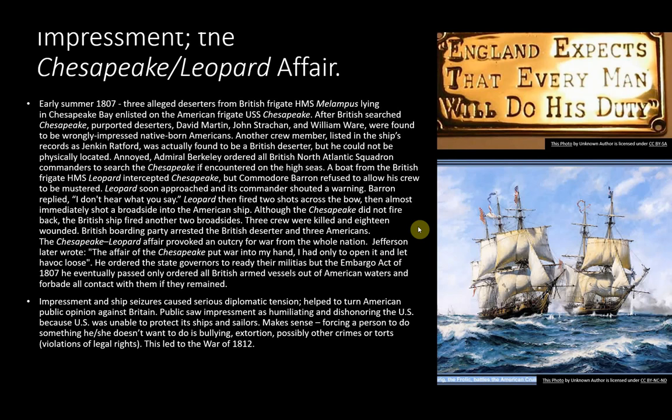Impressment and ship seizures caused serious diplomatic tension and turned American public opinion against Britain. The public saw impressment as humiliating and dishonoring the U.S. because the U.S. was unable to protect its ships and sailors. Forcing someone to do something they don't want to do is bullying on a personal level and extortion on a national level — this is what was happening writ large between nations, and it led to the War of 1812.